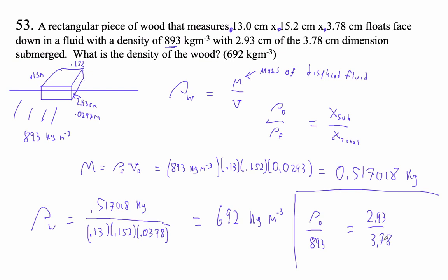So let's take 893 times 2.93 divided by 3.78. And in a fraction of the time, I arrived at the object's density being 692.19. So, there you go.